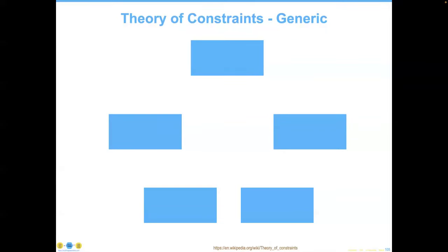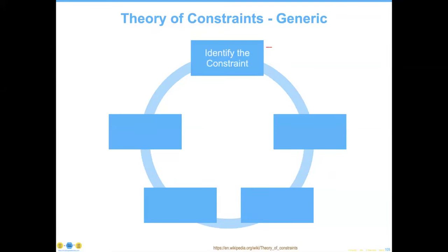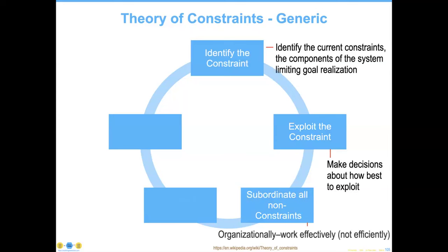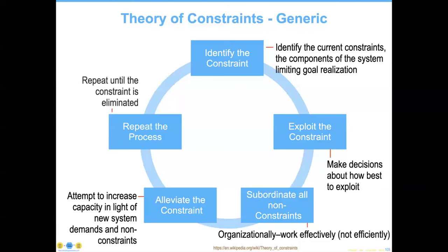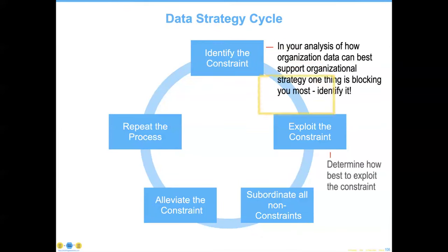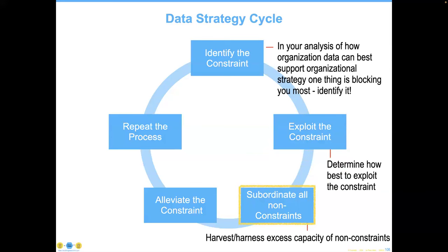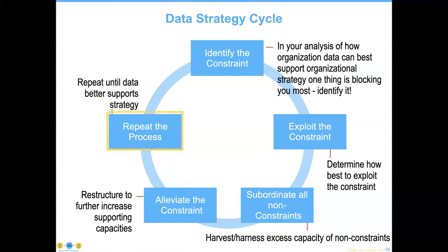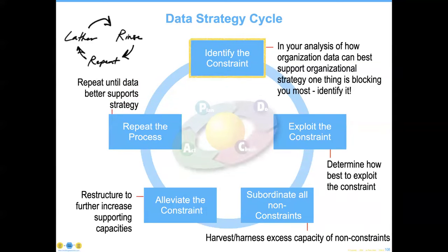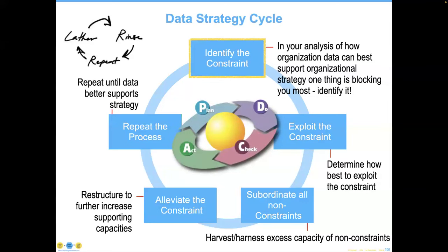Each cycle goes through a specific focus. The key to getting this right is to understand Goldratt's theory, which is to identify the current constraint and make decisions about how best to exploit it, subordinate all of the non-constraints to the new piece that can be exploited, and when we specify in terms of very specific business goals, alleviate that current constraint or elevate it depending on which way your analysis works out. This process of cycling through organizational strategic initiatives is a way that the organization can get better at all of these pieces.